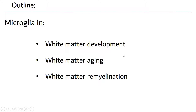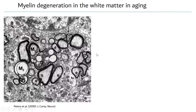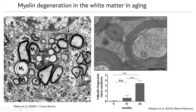Aging is associated with myelin degeneration. This was first noted by Peters in non-human primates, where EM pictures show pathological features of myelin. We also showed this in mice — for example, myelin fragments still attached to but pinched off from the myelin sheet, becoming part of another cellular element. This starts at around 18 months and is very apparent at 24 months.